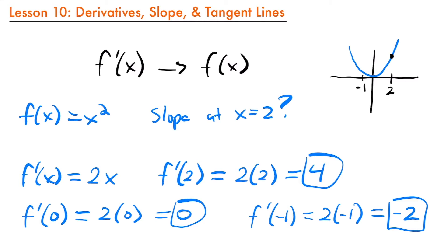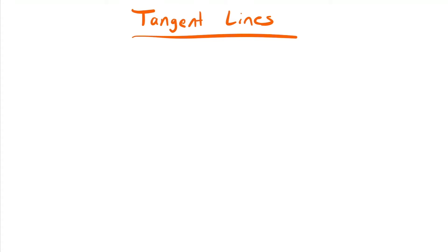This all matches up and further confirms that the derivative is giving us the slope at a point of a function. So now let's talk about tangent lines. The slope we get from a derivative is also the slope of the tangent line at that point on the function. From before, we had x squared and found the slope at x equals 2 to be 4, so 4 is the slope of the tangent line at x equals 2.